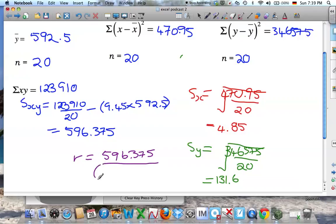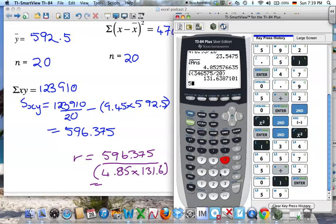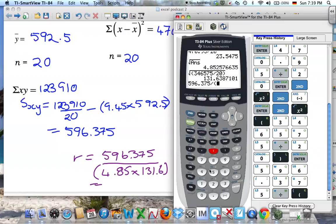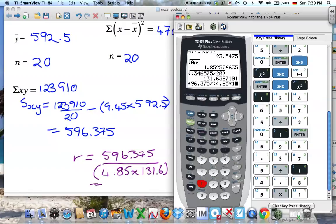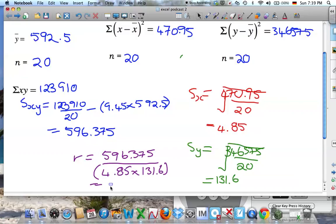All over, now very important that you work out the answer before you put this in the calculator, of the denominator, so 4.85 times 131.6. Then we get the calculator, so I've got 596.375 divided by, now make sure you use brackets here, 4.85 times 131.6, and I get 0.934.